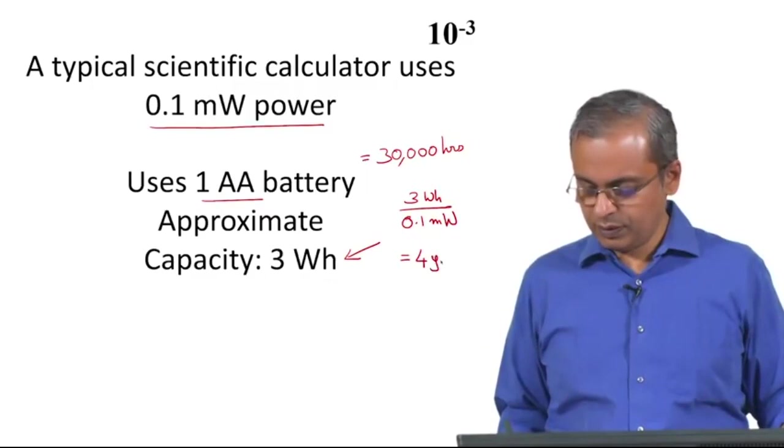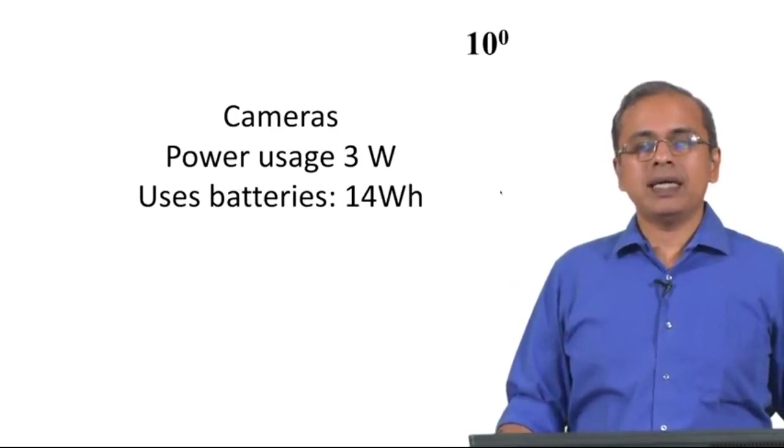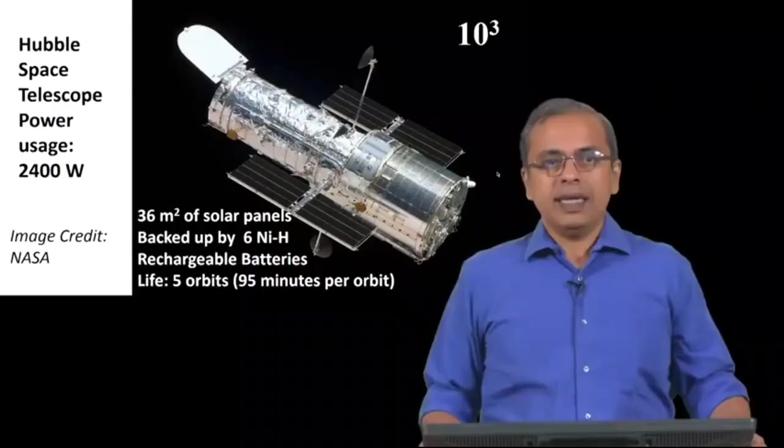This is roughly equal to 4 years, approximately power 0. 10 power 0 is basically a quantity which is in the unit place, so to speak. Typical cameras, for example, the power used by household bulbs - a typical household bulb that you would see looks something like this, different kinds of bulbs are available these days.